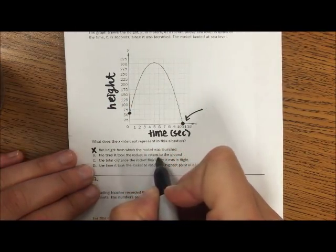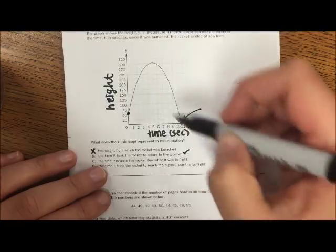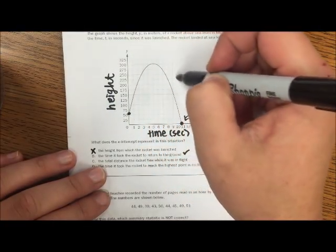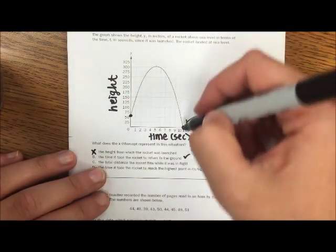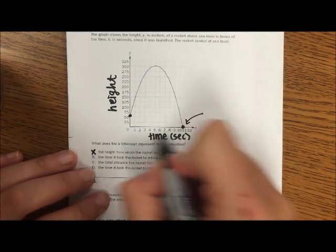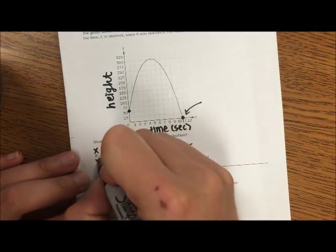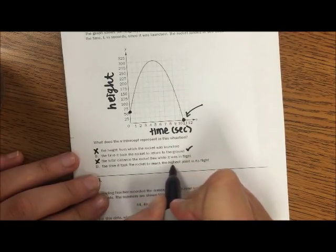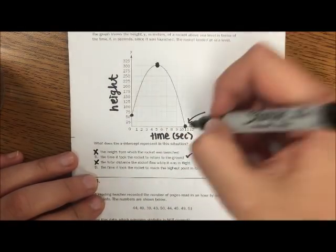So the height from which the rocket was launched? That, nope, that would be your y-intercept. So that's not it. The time it took the rocket to return to the ground? Well, that seems about right. Right, I left off and then we're talking time, so the time it hit the ground. The total distance? No, this is not distance. The time it took the rocket to reach the highest point? Well, here's the highest point, but we're talking about this one. So B would be your option.